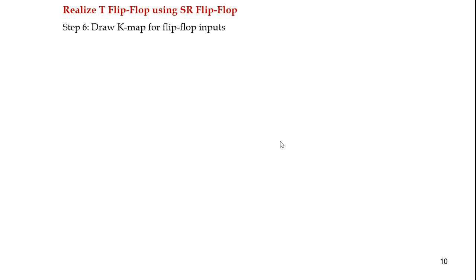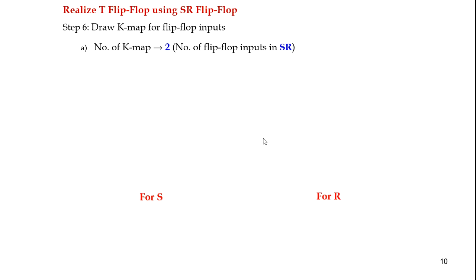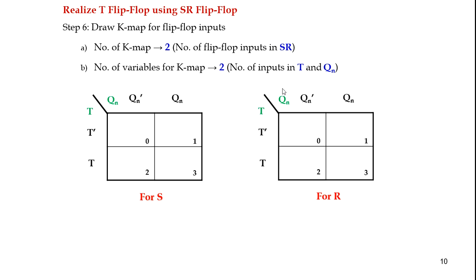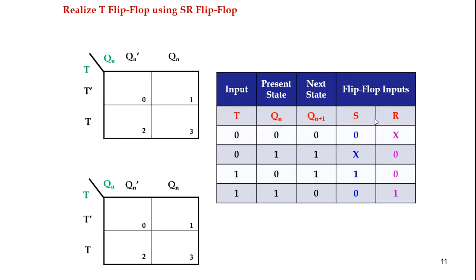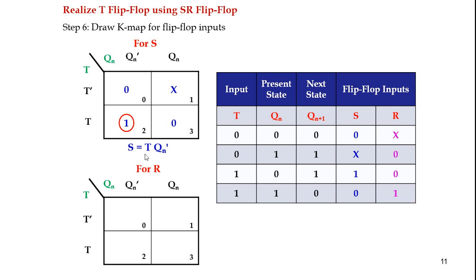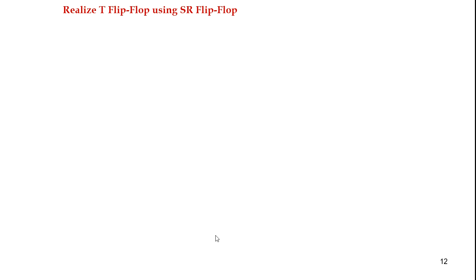The next step is to draw K-maps for the flip-flop inputs. The number of SR flip-flop inputs is 2, so we plot two K-maps — one for S and one for R. The number of variables is also 2 since inputs are T and Qn. For S, values are 0, don't care, 1, and 0. Since there is no pair, we group individually and the equation is S = T·Q̄n. For R, values are don't care, 0, 0, and 1, giving the equation R = T·Qn.